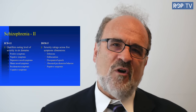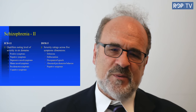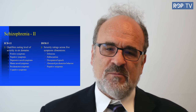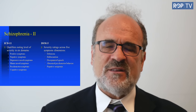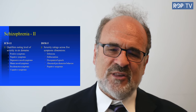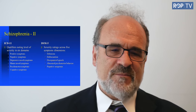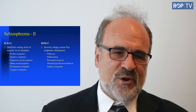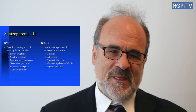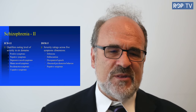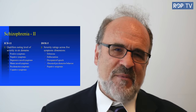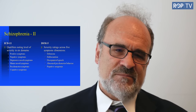Both DSM-5 and ICD-11 eliminated schizophrenia subtypes in favor of a more dimensional approach, but implemented it differently. DSM-5 uses five symptom severity dimensions: delusions, hallucinations, disorganized speech, abnormal psychomotor behavior, and negative symptoms. ICD-11 uses six dimensions: positive symptoms (covering four of the DSM-5 items), negative symptoms, depressive mood symptoms, manic mood symptoms, psychomotor symptoms, and cognitive symptoms.